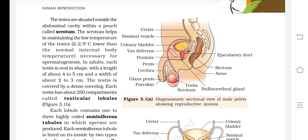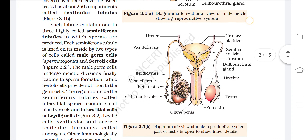In adults, each testis is oval in shape with a length of about 4 to 5 centimeters and a width of about 2 to 3 centimeters. Each testis has about 250 compartments called testicular lobules, each lobule containing 1 to 3 highly coiled seminiferous tubules in which sperms are produced.